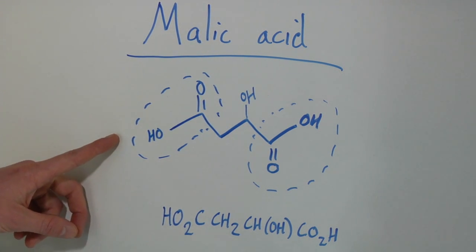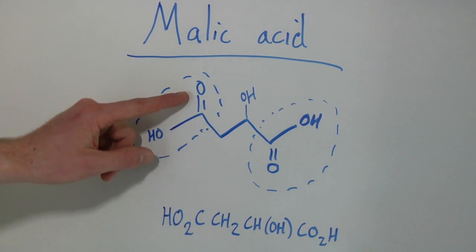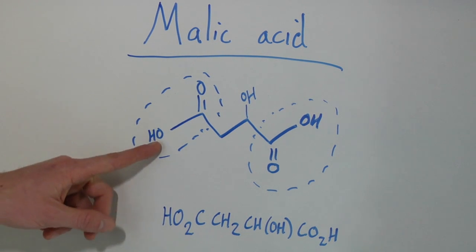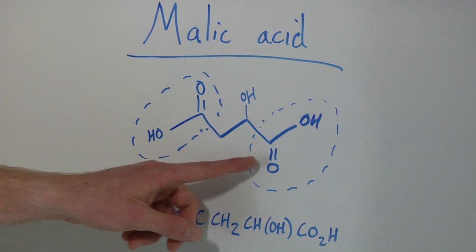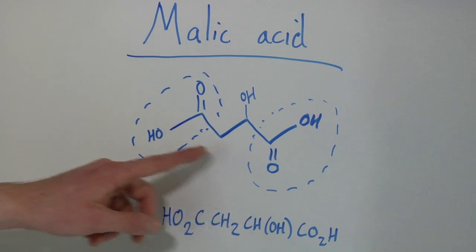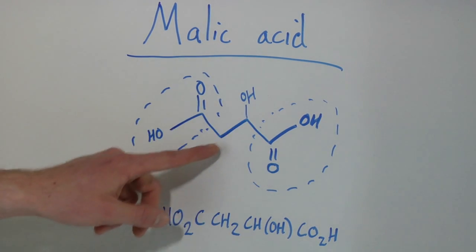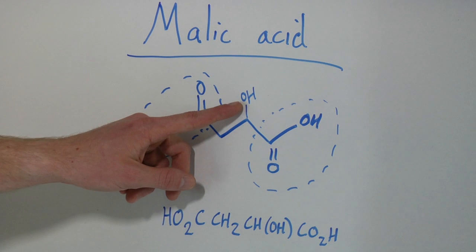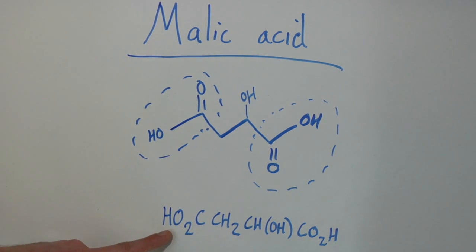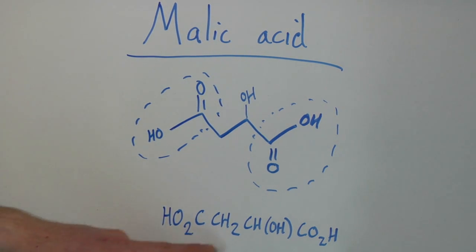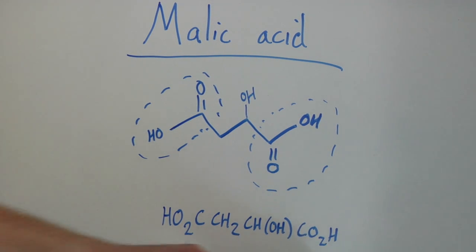A carboxyl group is simply a carbon double bonded to an oxygen with an OH, or hydroxyl, on the other end. You notice there are two different carboxyl groups and two other carbons with a hydroxyl in the middle. The actual chemical formula for malic acid is HO2CCH2CHOHCO2H.